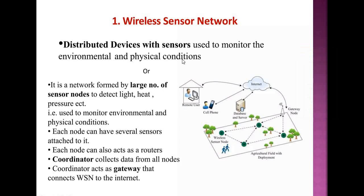First, we are going to see about wireless sensor networks — distributed devices with sensors used to monitor environmental and physical conditions. It is a network formed by a large number of sensor nodes to detect light, heat, pressure, etc., and is used to monitor environmental and physical data conditions. Each node can have several sensors and can also act as a router.